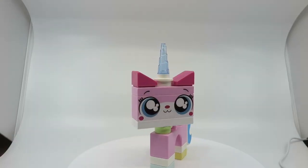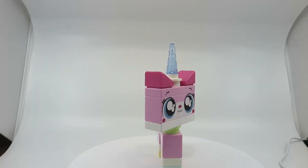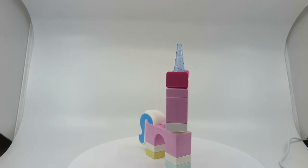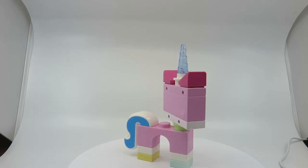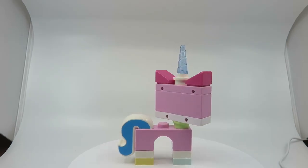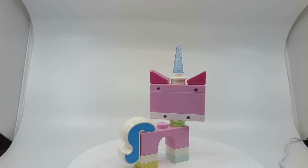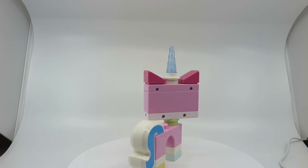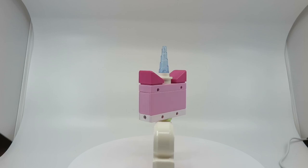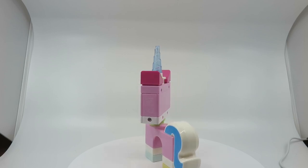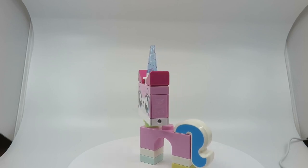Next up, we have the Unikitty torch. So again, this is from the new LEGO Movie 2 series. So if we do a full turnaround here, we can see that it's basically the standard sort of Unikitty figure, just in a larger scale.